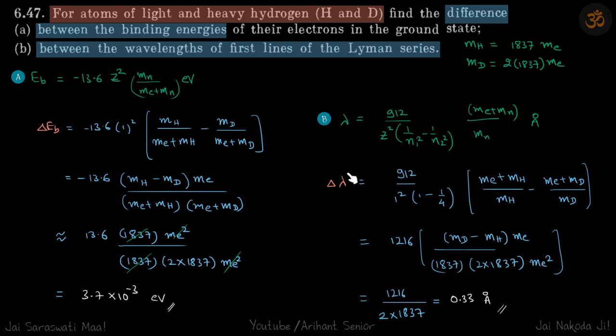We just do delta lambda now and that will be this. We just put the values from here and you will get your answer: 0.33 angstrom. So here also, as expected, the lambda of hydrogen is greater than lambda of deuterium because energy of hydrogen will be less than energy of deuterium.